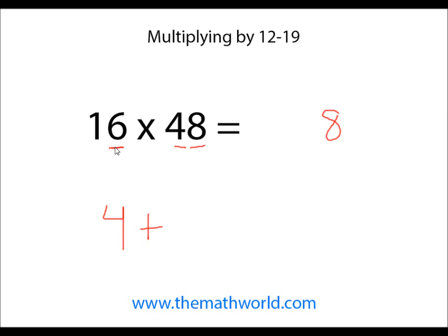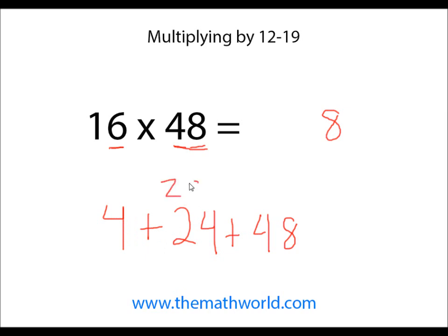We're going to add 4 to 6 times 4. We have to multiply the ones digit in the teen, which in this particular case is 6, by each of the numbers. We already did 6 times 8, so we're going to do 6 times 4 is 24. We'll go ahead and write down 24 plus 48. 4 plus 24 is 28, and 28 plus 48 is 76. So 16 times 48 is 768.